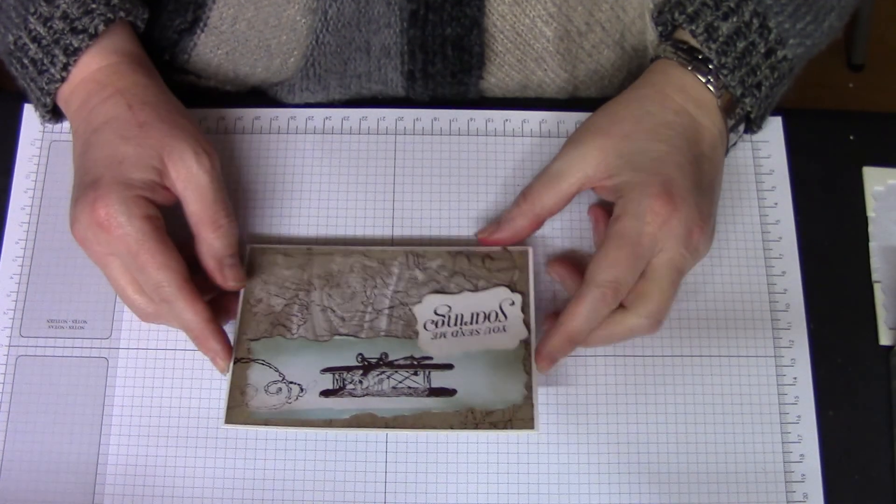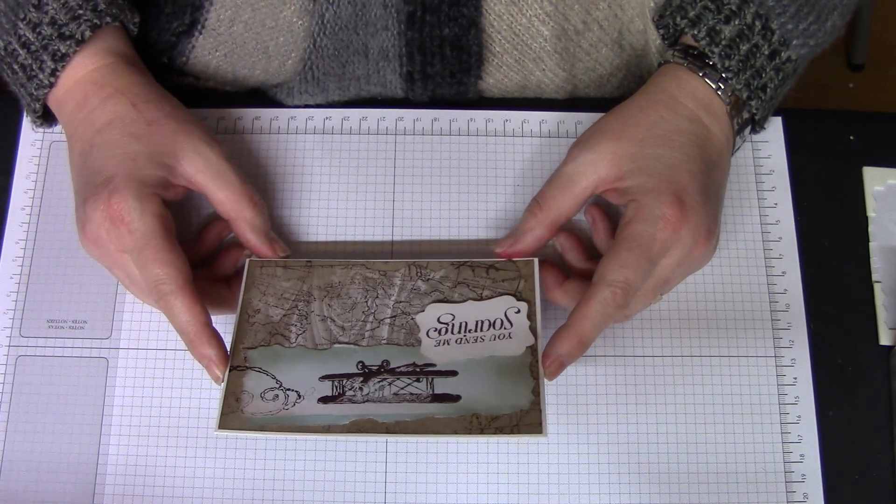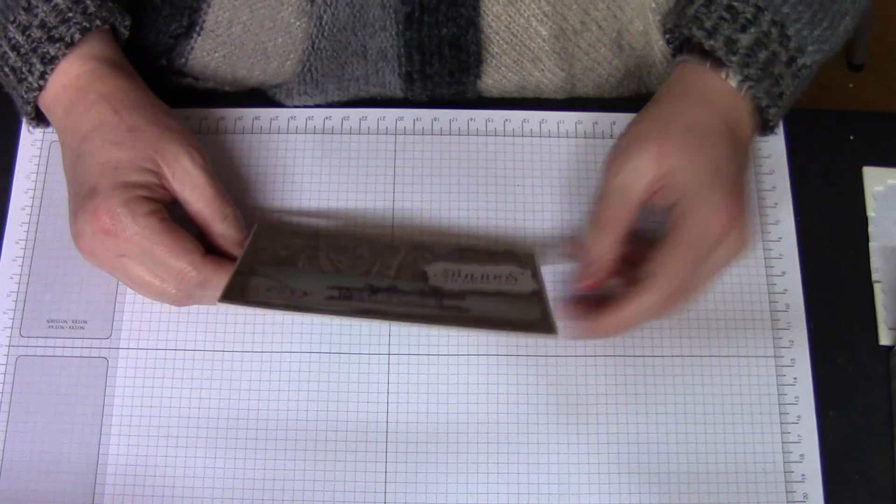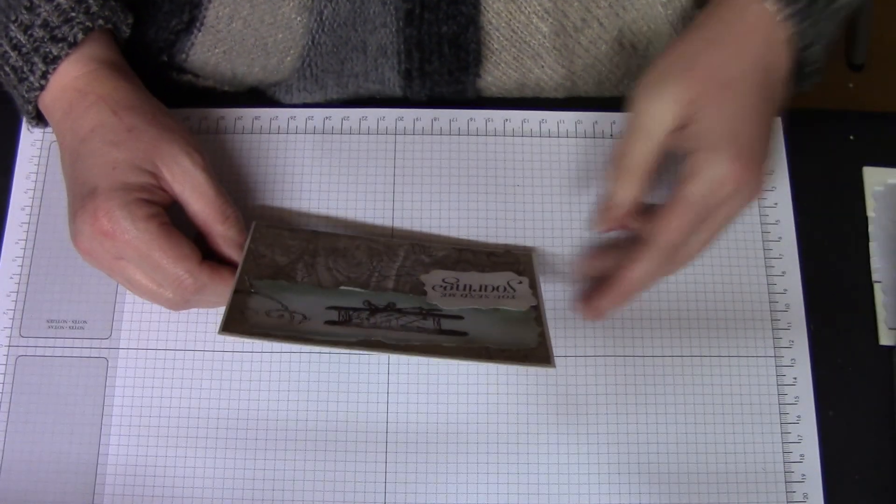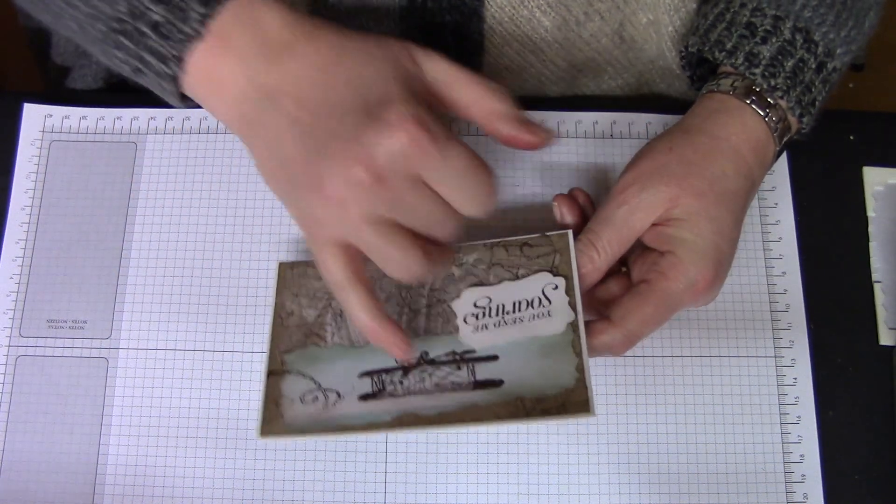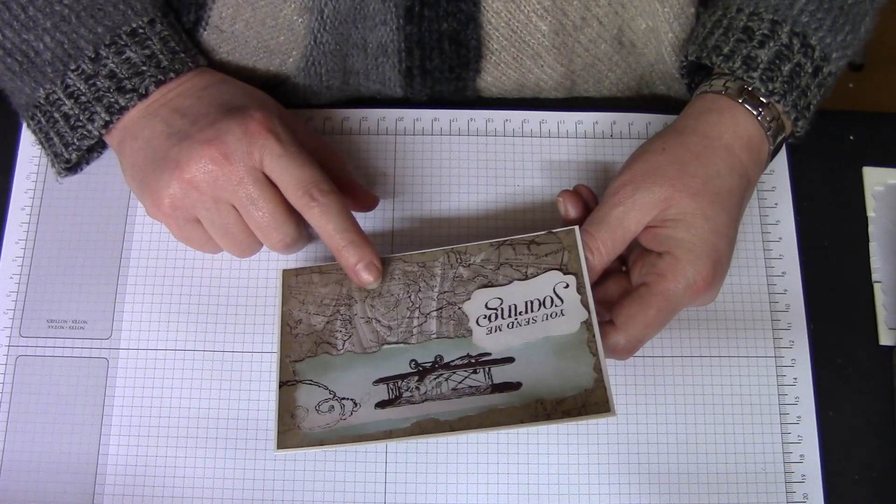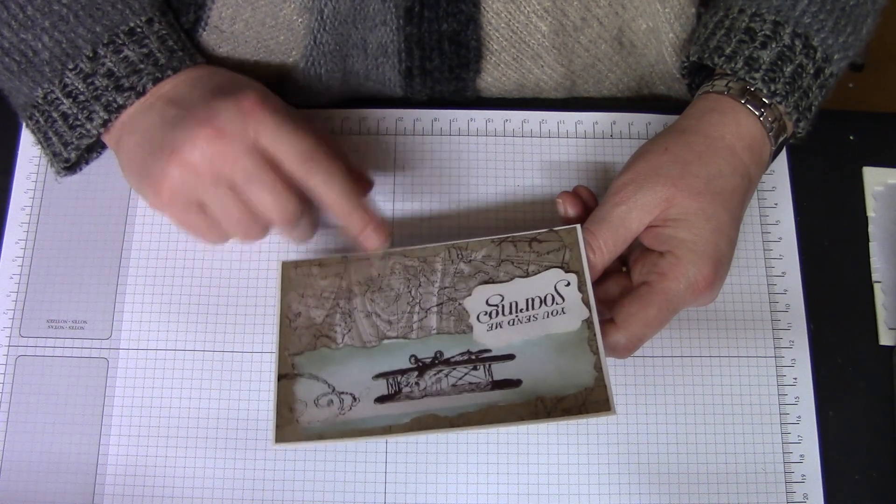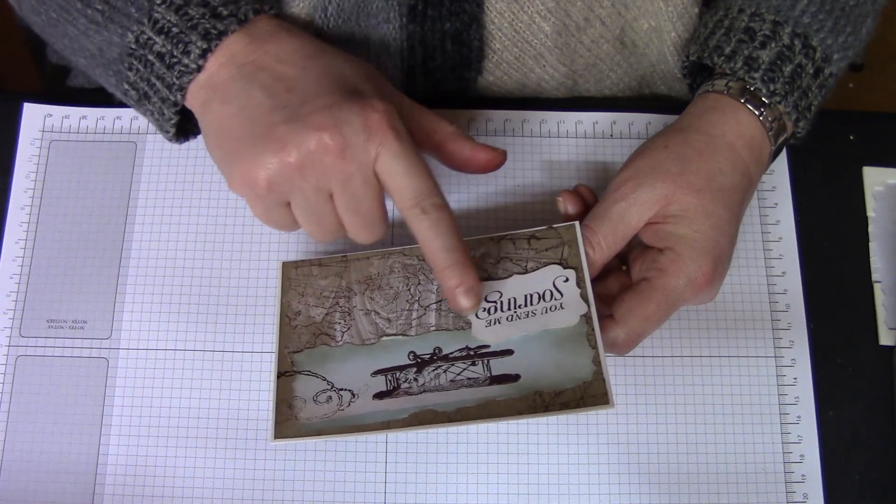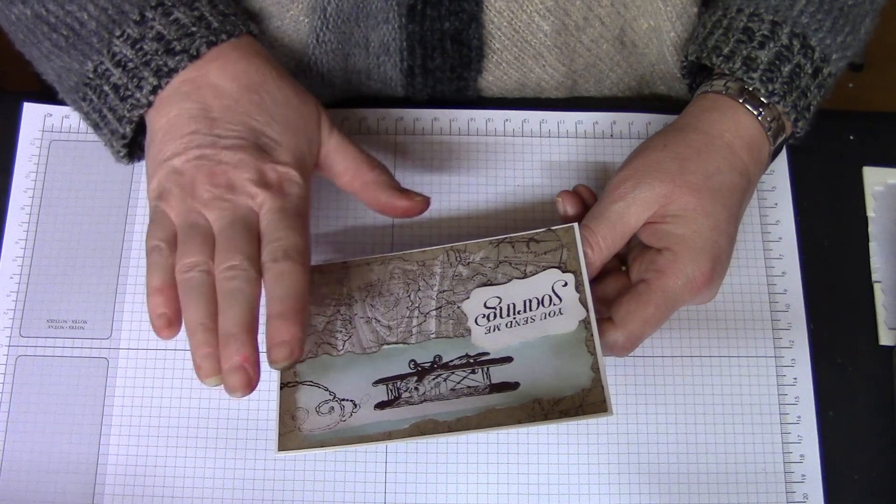Welcome back to Stamping at the Warren. I'm Kim Tolton and today I have this card for you. It is the Sky's the Limit stamp set with this beautiful biplane, and I've combined it with the world map. I'm actually using the Perfectly Artistic Designer Series paper. Both the stamp set and the paper I'm using are Sale-A-Bration exclusives.